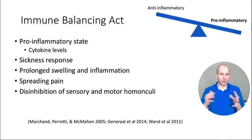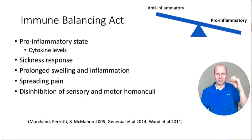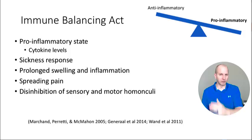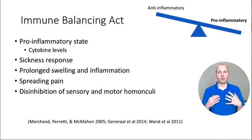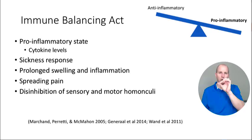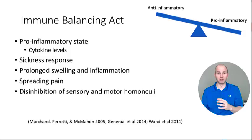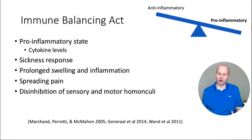Spreading pain — when we start seeing disinhibition of sensory receptive fields where what started as a nice L3 dermatome starts spreading into L4 and L5, and now the whole leg becomes involved. Disinhibition of sensory and motor homunculi: all of a sudden that representation of a hand in your brain — Butler's pin box example — instead of looking like one hand, it looks like a smudged together hand without fine motor capabilities. Patients who are in chronic sensitivity often aren't moving their body part, not feeding their sensory and motor homunculi any proprioceptive information to maintain good body maps.